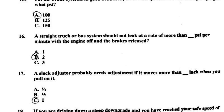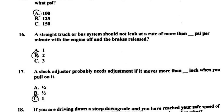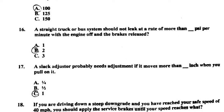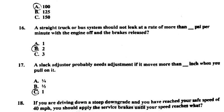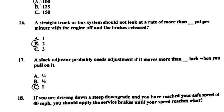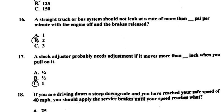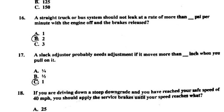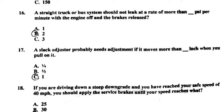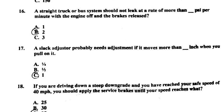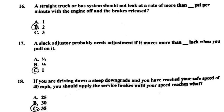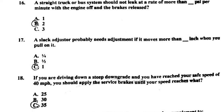Number seventeen: a slack adjuster probably needs adjustment if it moves more than one inch when you pull on it. Number eighteen: if you're driving down a steep downgrade and you have reached your safe speed of 40 miles per hour, you should apply the service brakes until your speed reaches 35 miles per hour.